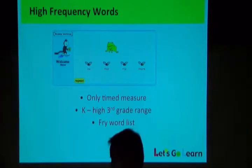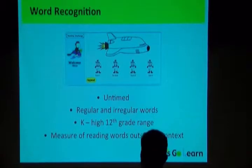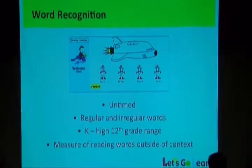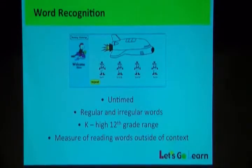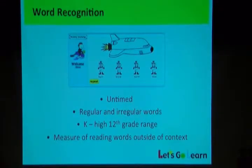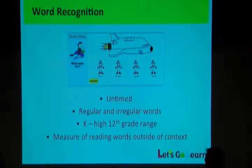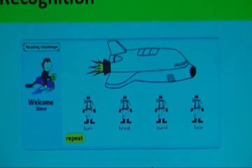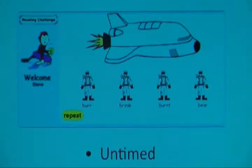This subtest goes up to high third grade. The next one is word recognition. This is the grades 4 through 7 interface. This one is untimed, and scores go up through 12th grade. Once students nail down decoding, the score will go up. You may see some fourth or fifth graders whose scores shoot up once they really nail down decoding.